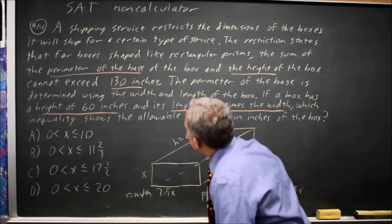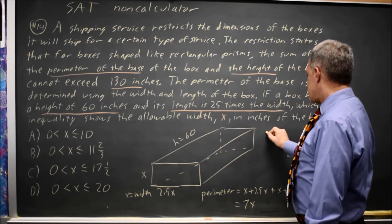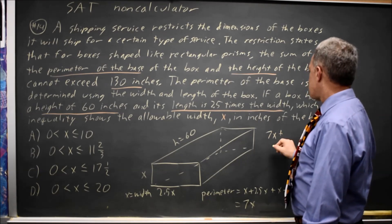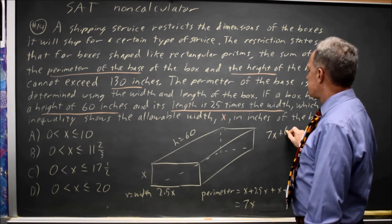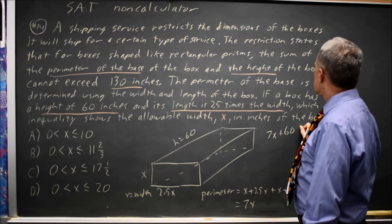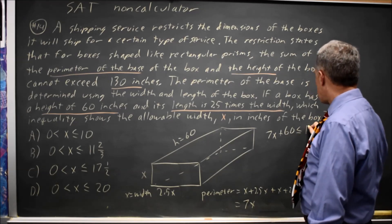Now in the space I have left I have to solve 7x plus, that's my perimeter, plus my height 60 cannot exceed, so that's less than or equal to 130.